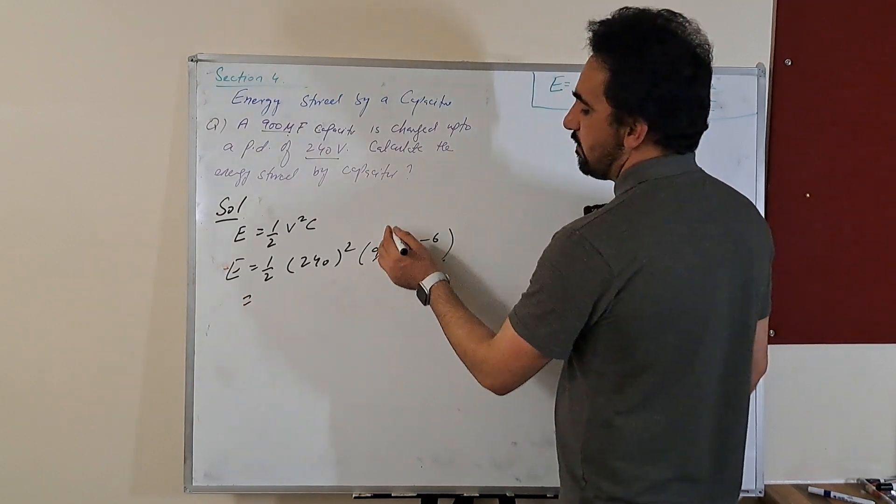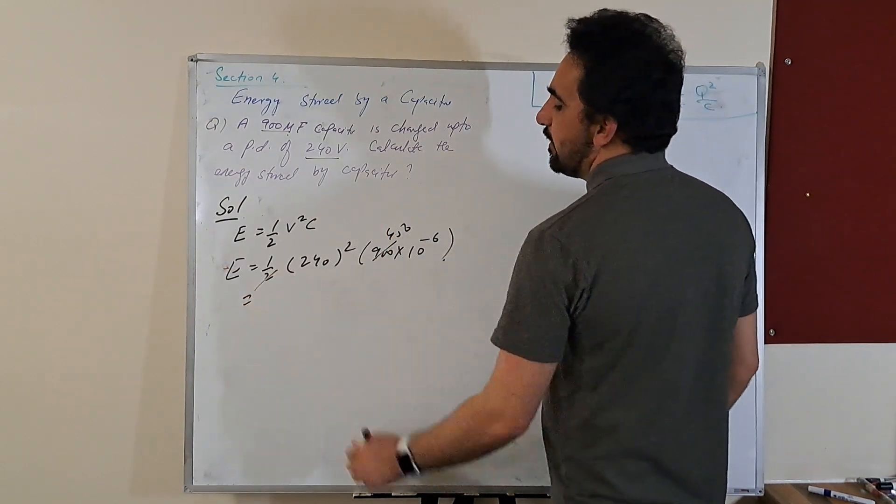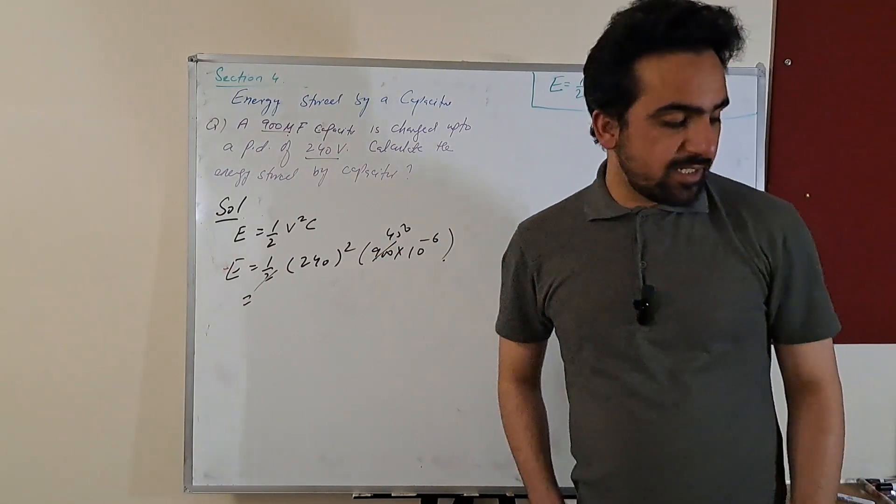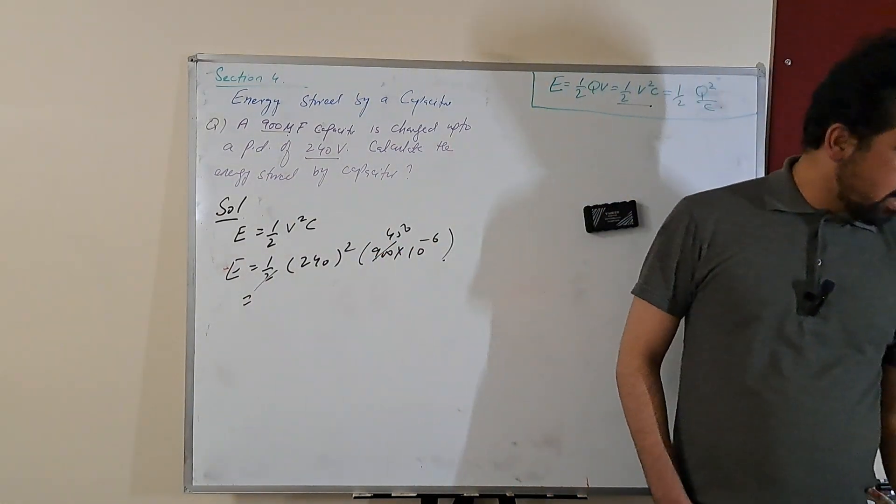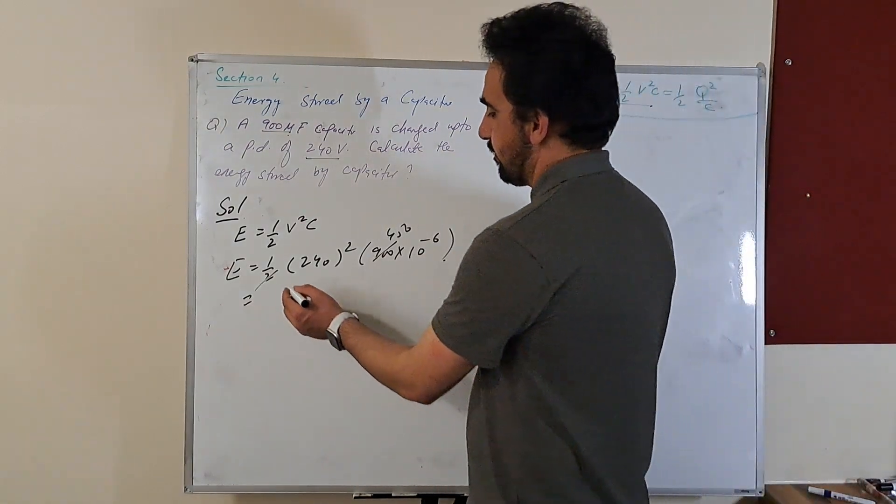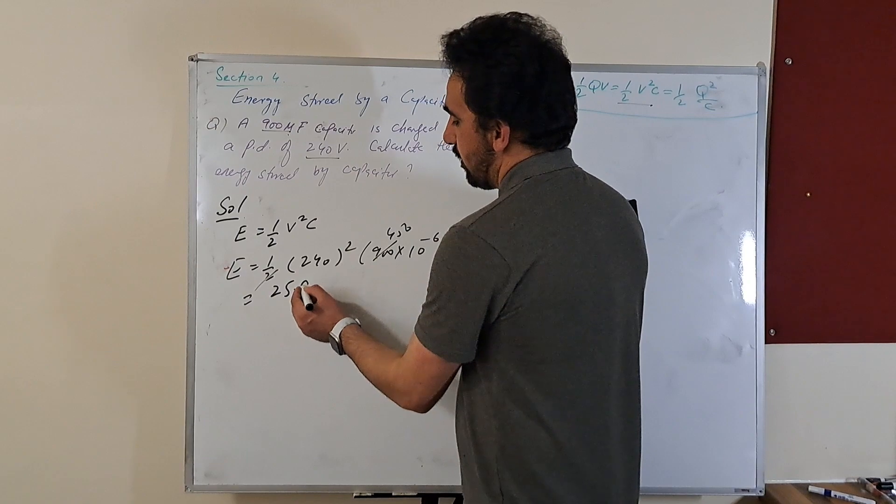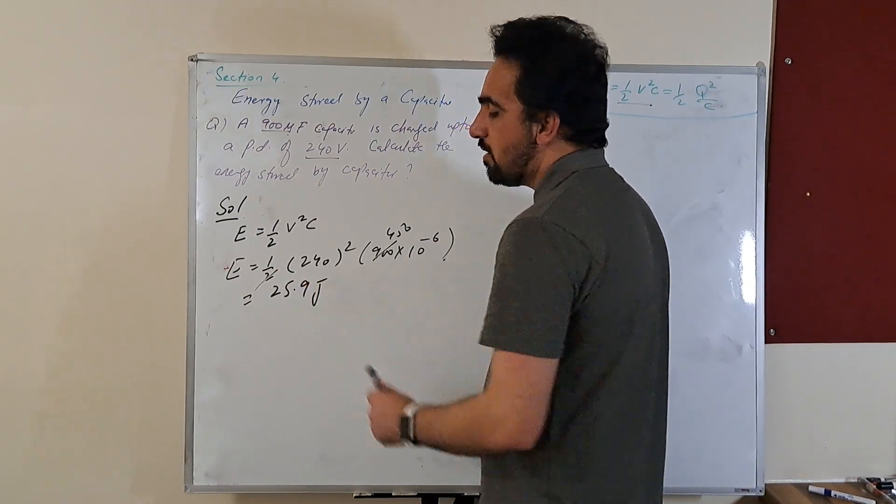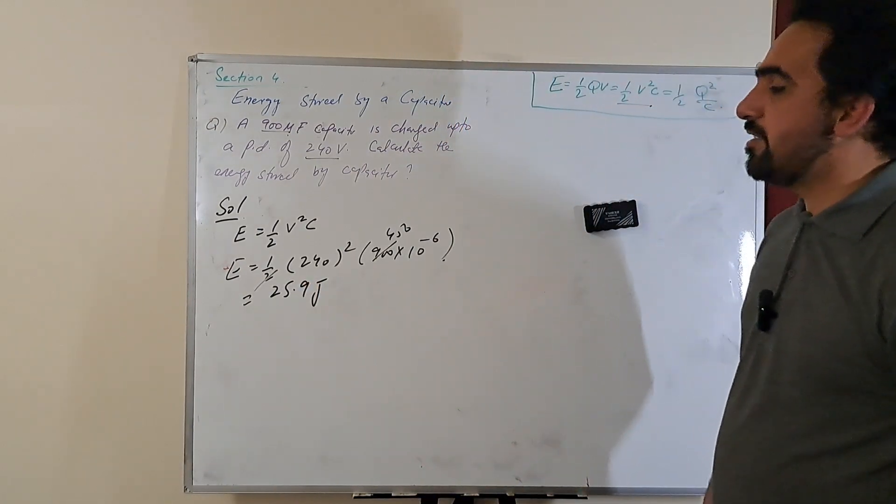If we solve this, this will become equal to 450, and then 450 and 240 square. I have a final value of 25.9 joules, almost 26 joules of energy.